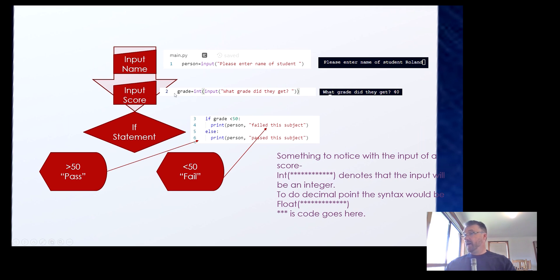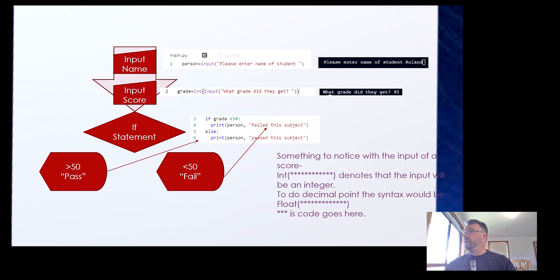This next part — input a score — would be: grade or score equals int(input('What grade did they get?')). The score at this point would be 40, which is of course below 50, so you'd assume it would end up failing. Notice that anything needing a whole number — not 39.97 but a whole number like 40, 39, or 38 — we use int to tell the computer the grade is a number. That's the question they'll get, and this is the output: 'What grade did you get? 40'.